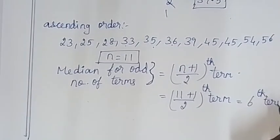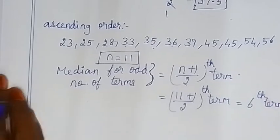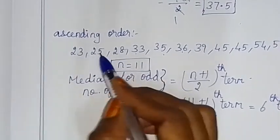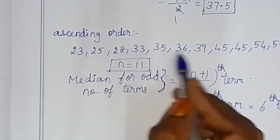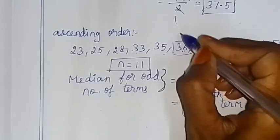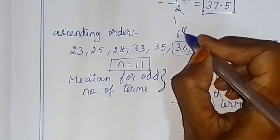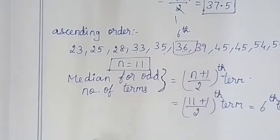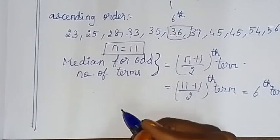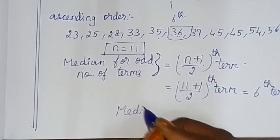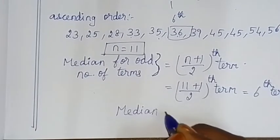With N = 11: (11+1)/2 = 12/2 = 6th term. Counting to the 6th term: 1, 2, 3, 4, 5, 6 — the 6th term is 36. So the median for the given data is equal to 36.